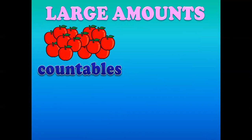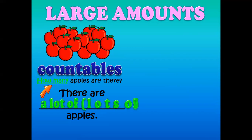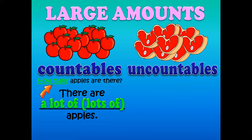Large amounts — for example, countable nouns. Remember, countable nouns are those that have a singular and a plural form. For example, you can say an apple, two apples; a table, two tables; a boy, two boys. You can say: how many apples are there? How many tomatoes are there? How many onions are there? Remember, 'how many' is for countable nouns. And the answer is: there are a lot of apples, or there are lots of apples.